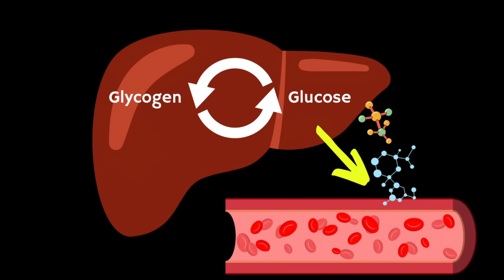When we need a quick source of energy, or the body isn't getting glucose from food, the glycogen is released from the liver, broken down into glucose, and sent into the bloodstream. However, there's limited storage space for glycogen, and once stores are full the liver will turn excess glucose into fat. Some of this fat will be stored in the liver or exported to other fat deposits in the body.